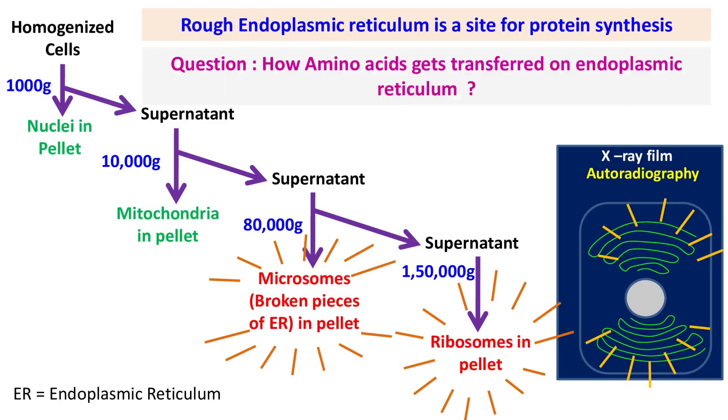So the question they asked was: how are amino acids transferred to the endoplasmic reticulum for protein synthesis?